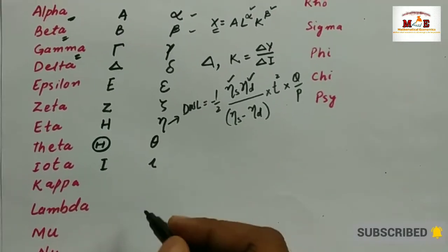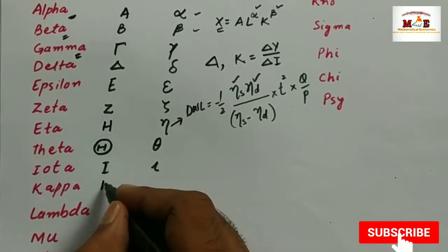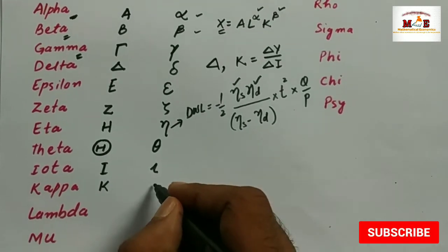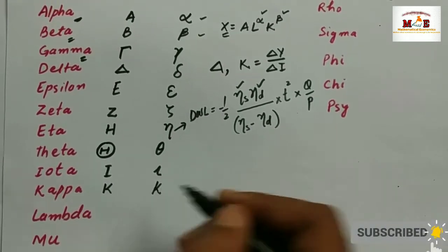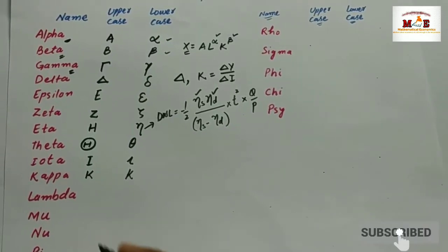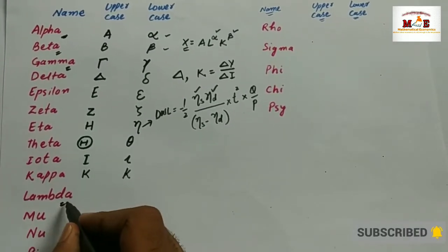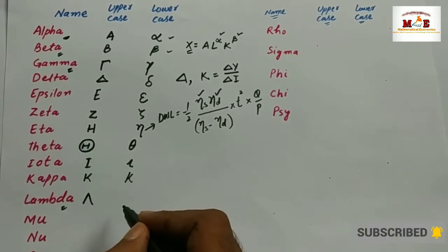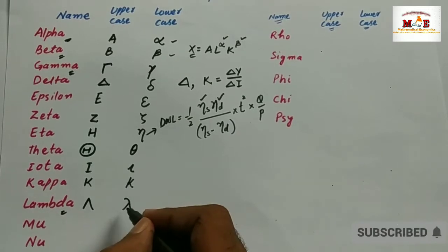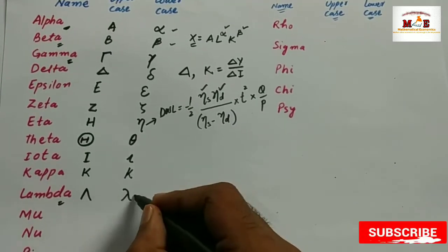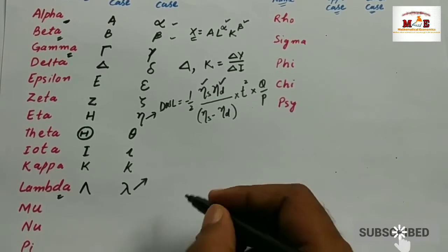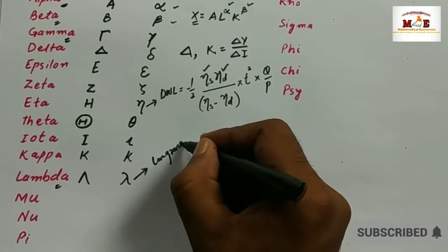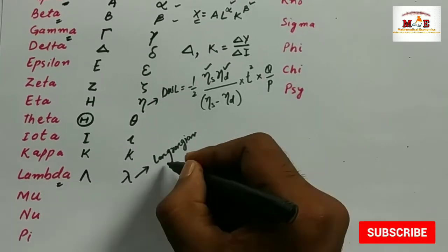And then kappa — its uppercase is represented by capital K, and lowercase is written like this. Lambda is mostly used in economics when we use the Lagrangian multiplier.